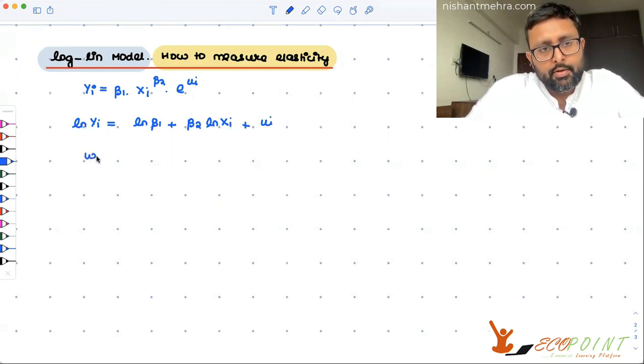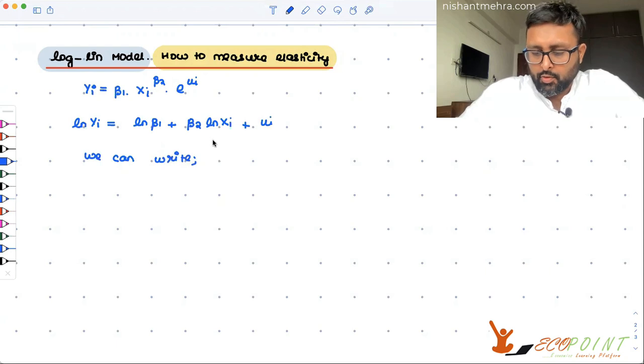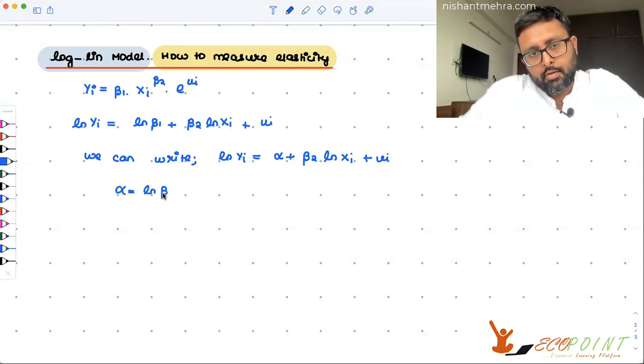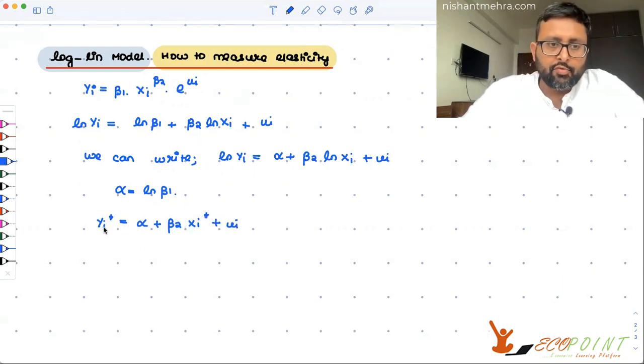We can write log of yi equals alpha plus beta 2 log xi plus ui. Alpha is basically log of beta 1. I can write log of yi as yi star equals alpha plus beta 2, where yi star is log yi, xi star is log xi.